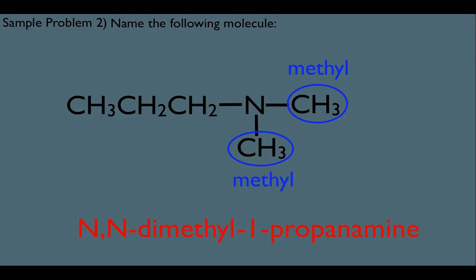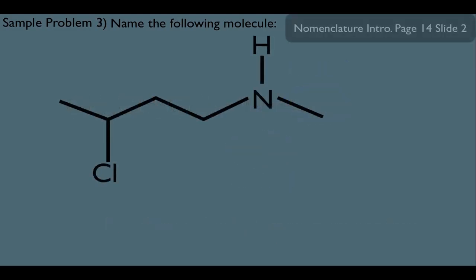So let's look at another example here and let's throw a halogen in and see what happens. Step one, remember the amine, just like the alcohol, has priority here. So you want to find the longest carbon chain that has the amine. And that would be this carbon chain right here. We got four carbons in the box, so parent name is butanamine.